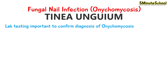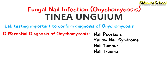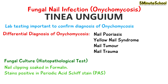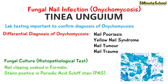Lab testing is an important way to confirm the diagnosis of fungal nail infections, because sometimes other nail diseases — like nail psoriasis, yellow nail syndrome, nail tumors, and trauma to the nail — can give the appearance of a fungal nail infection. A fungal culture can be done by taking a clipping of the nail, soaking it in formalin, and sending it to the lab for histopathological examination. If fungus is present, it stains positive with the PAS stain, which stands for periodic acid-Schiff stain.